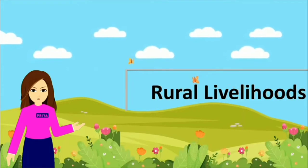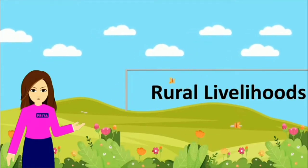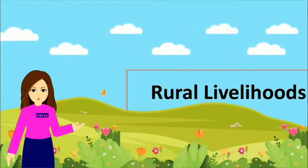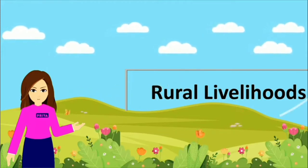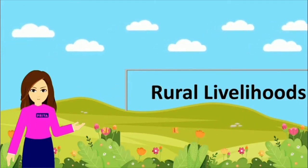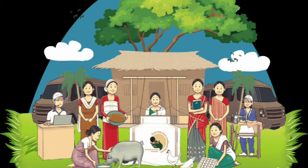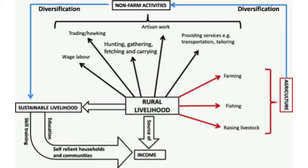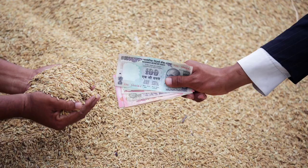Dear students, let us learn our first topic about rural livelihoods. We all know that people have to find various means to earn their living. It would be difficult to survive if there is no regular income for the people. A number of activities take place in a village. Mostly, people are dependent upon agriculture, and at the same time, there are a number of people who follow different occupations. There are differences in the incomes of the various categories of farmers.